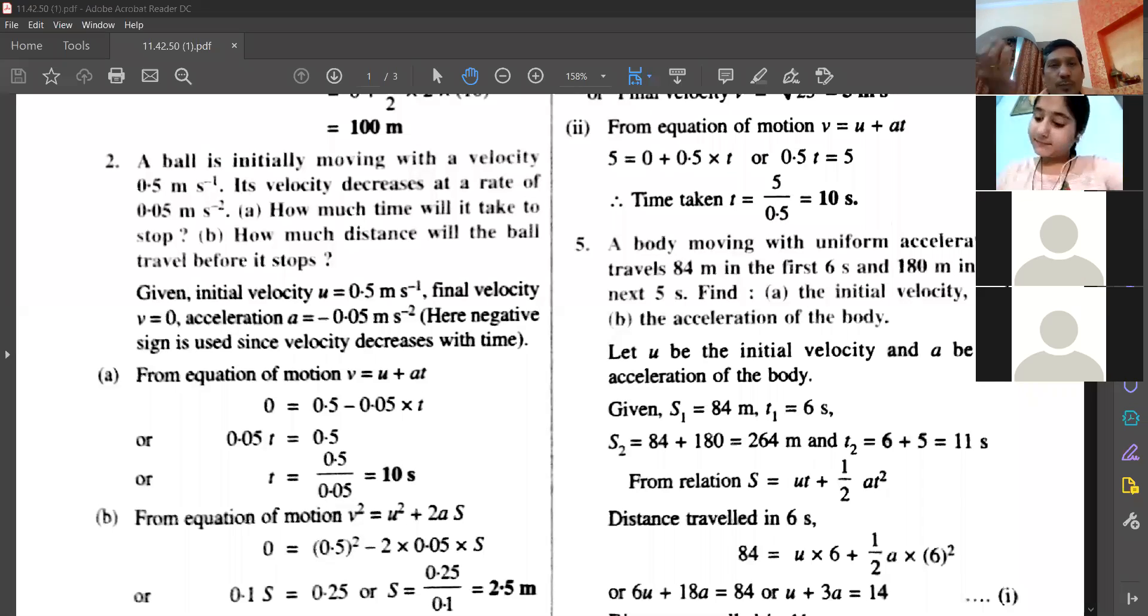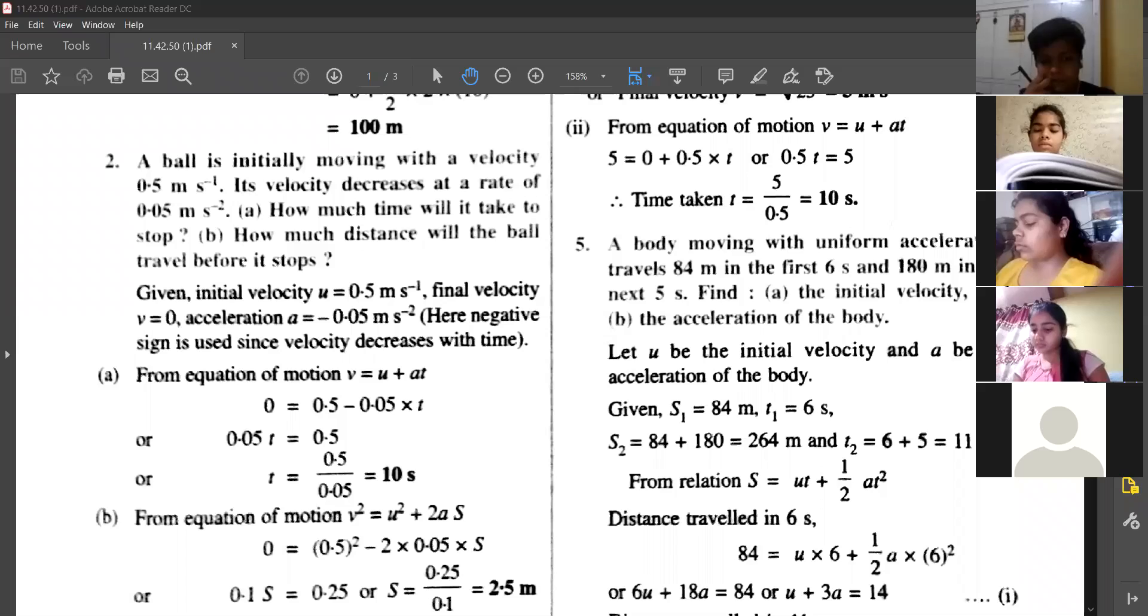So you've got the initial velocity, 0.5 meter per second. This velocity increases at the rate of 0.05 meter per second squared. What is it? What do you mean by rate of decrease or rate of increase? What does it imply? Tell me please, what is implied by rate of increase or rate of decrease?